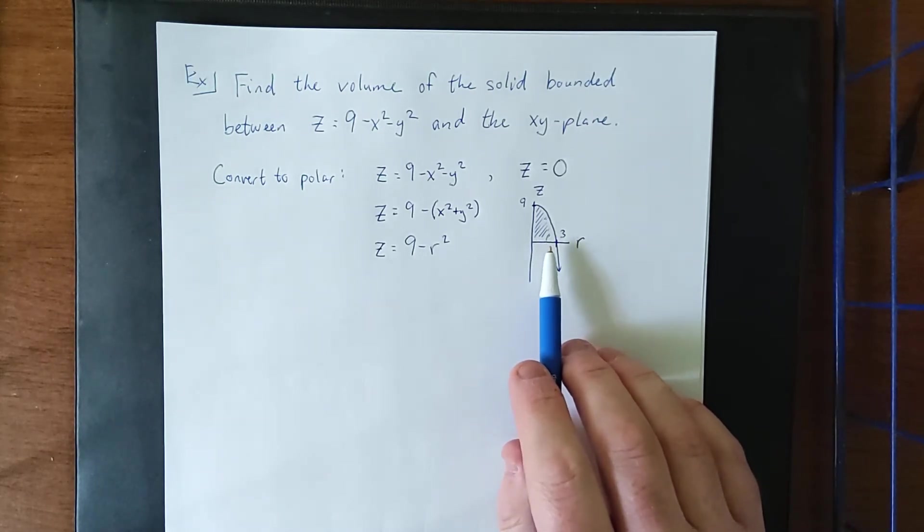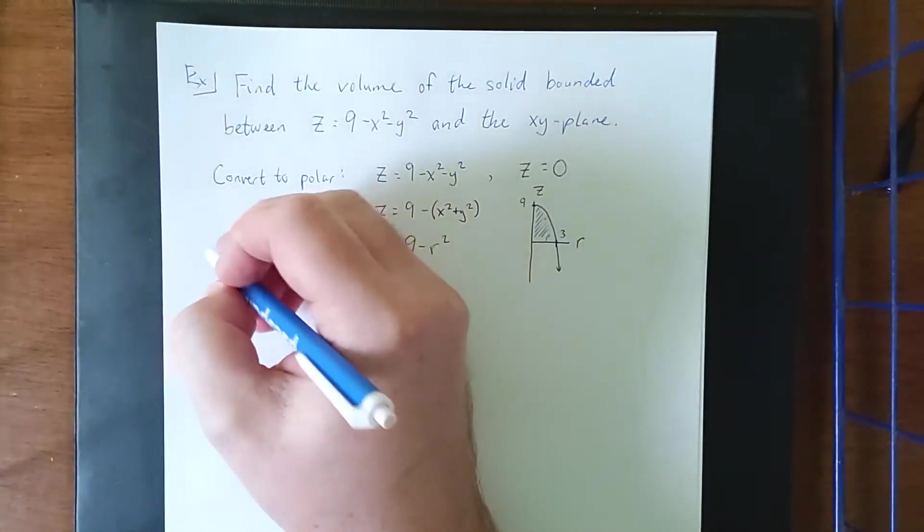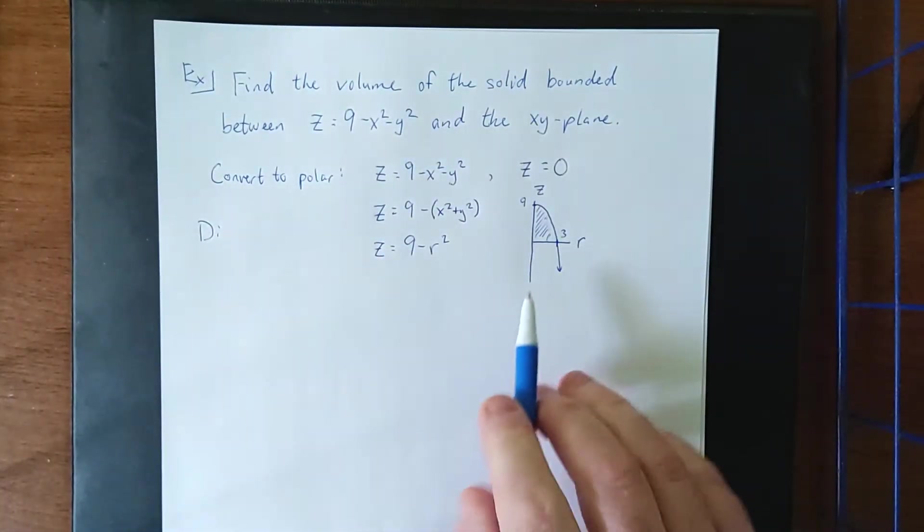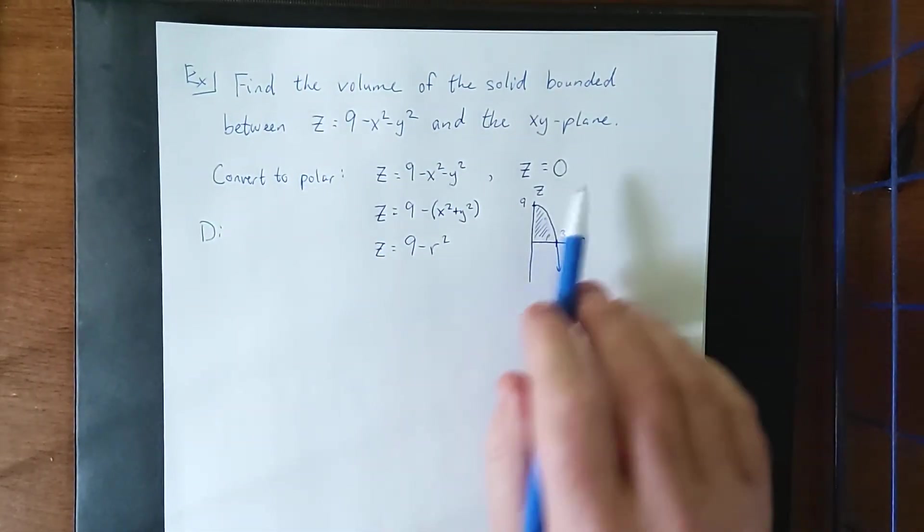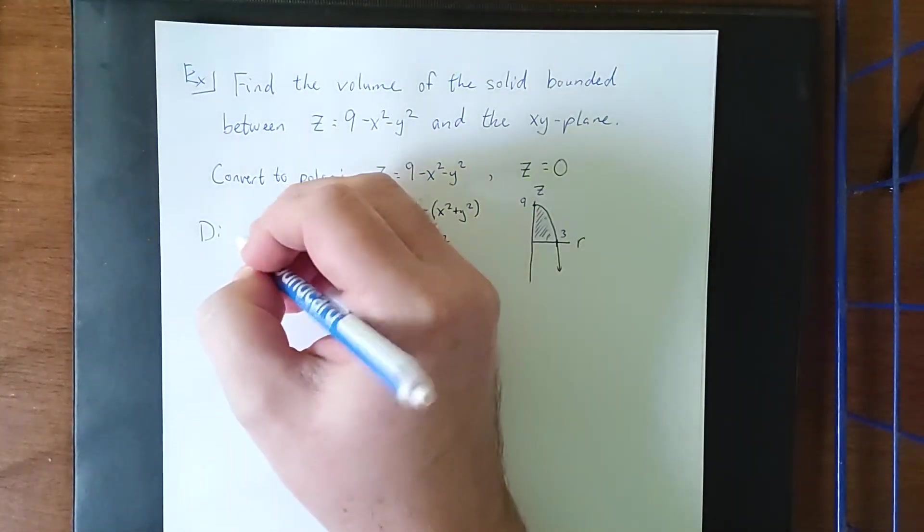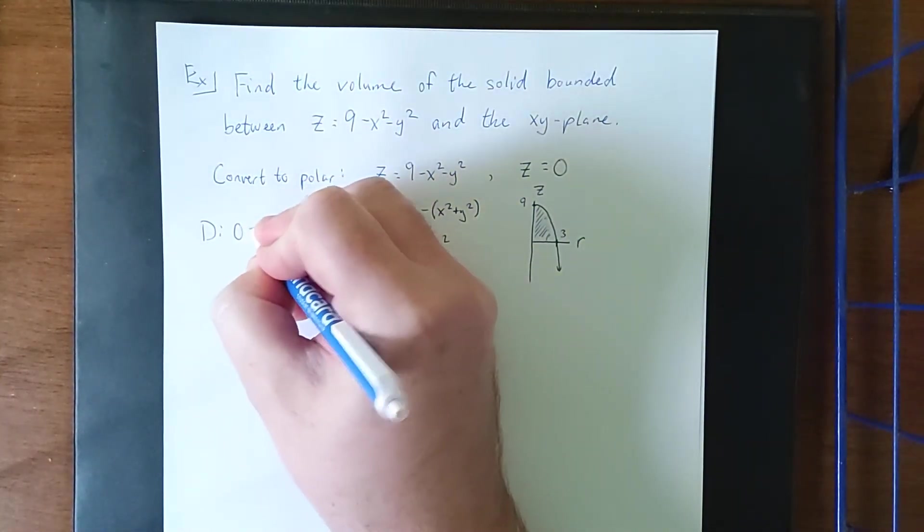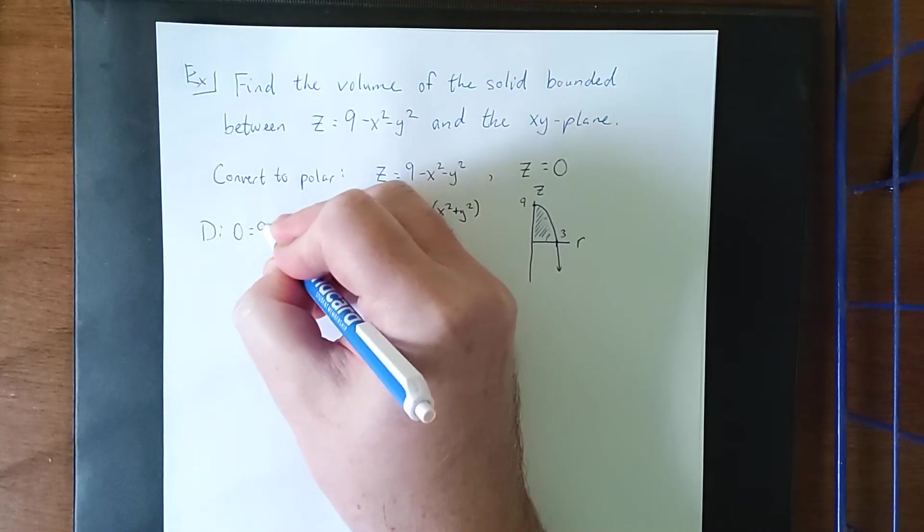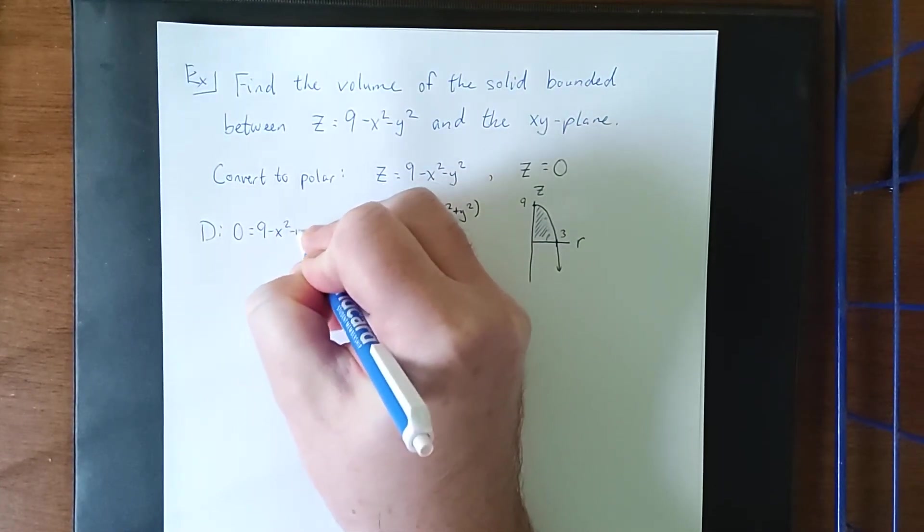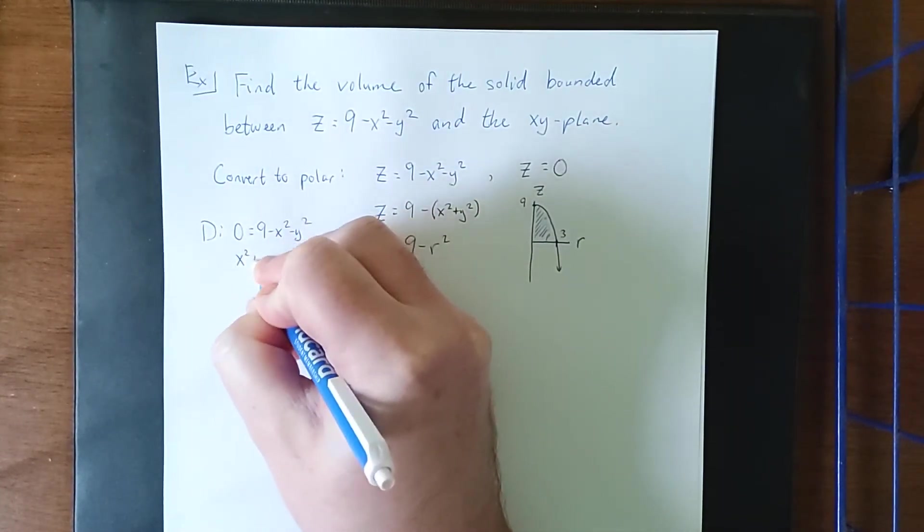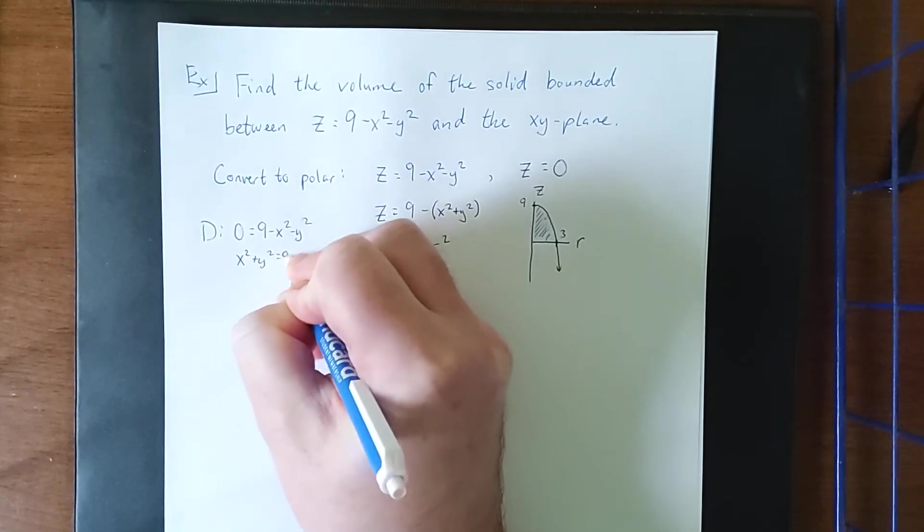Now in addition, I need to figure out our region of integration, which is going to be the intersection between this paraboloid and the xy plane. So that would be 0 equals 9 minus x squared minus y squared, better known as x squared plus y squared equals 9.